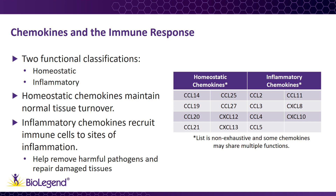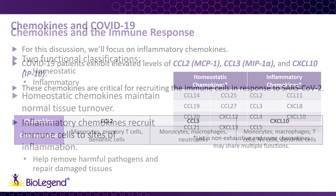Inflammatory chemokines recruit immune cells by binding surface receptors. Different immune cell types express different surface receptors, leading to recruitment by specific chemokines. In this way, various immune cells including monocytes, macrophages, T-lymphocytes, mast cells, eosinophils, and neutrophils can all be recruited as needed to damaged tissue.